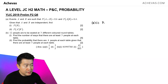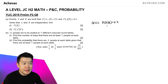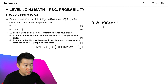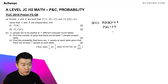We're given that the probability of A given B is equal to 0.4. And since it is also given that A and B are independent, this conditional probability is the same as the probability of A. So we know that the probability of A is equal to 0.4.